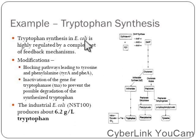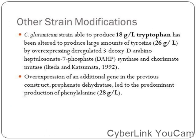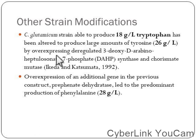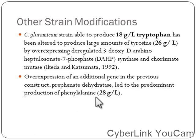In the E. coli strain, these modifications were carried out and they achieved production of about 6.2 grams per liter of tryptophan. Another strain modification was done in Corynebacterium glutamicum, which has the capability to produce 18 grams per liter; it was altered to produce 26 grams per liter of tyrosine by overexpression of the deregulated DAHP synthase and chorismate mutase enzymes. Further overexpression of prephenate dehydratase enzyme led to production of phenylalanine at 28 grams per liter.